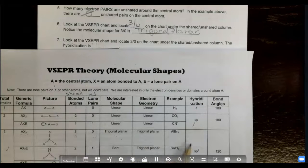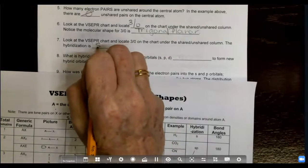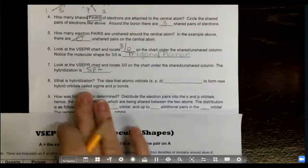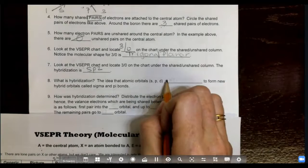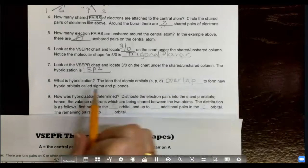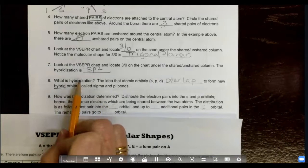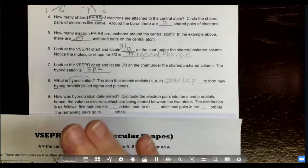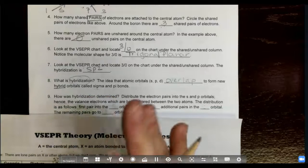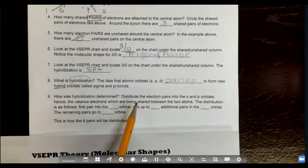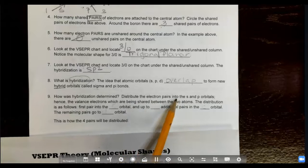And so if I go to hybridization, it says sp2. That's what we're going to write: sp2. But what does that mean? What is hybridization? The idea that atomic orbitals will overlap to form new hybrid orbitals—that's where this word comes from—called sigma and pi bonds. So it's just like the 1s2 2s2 from the electron configurations.